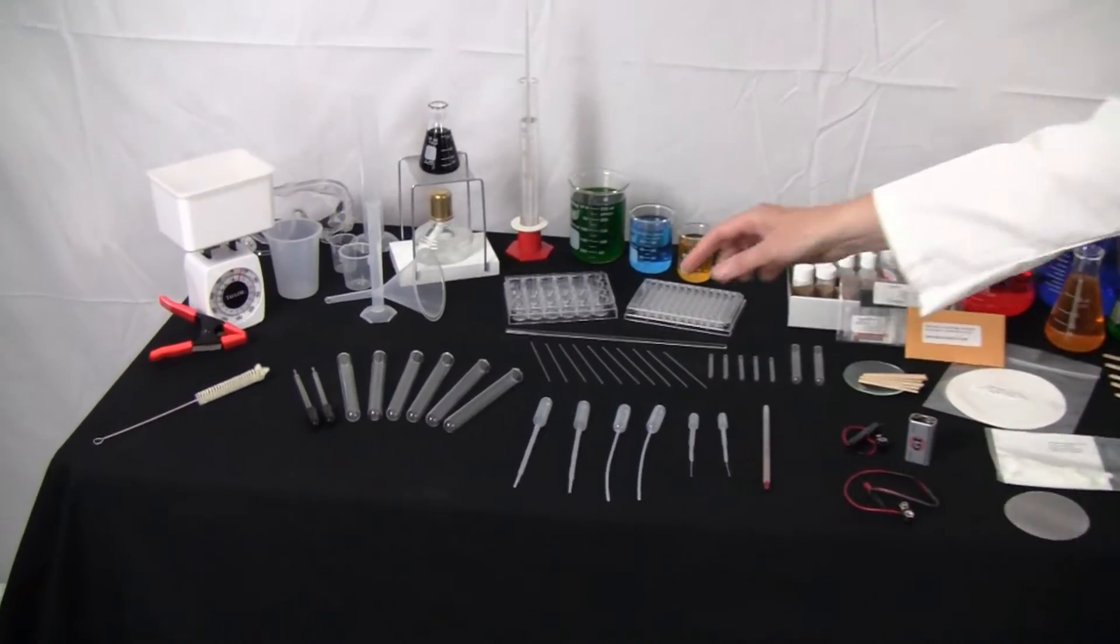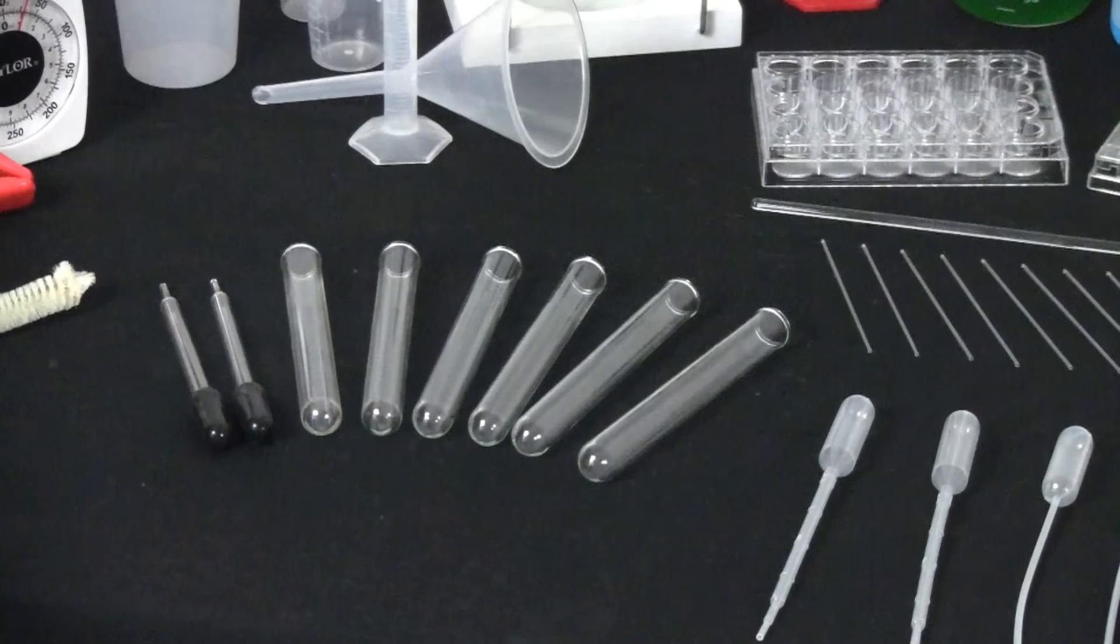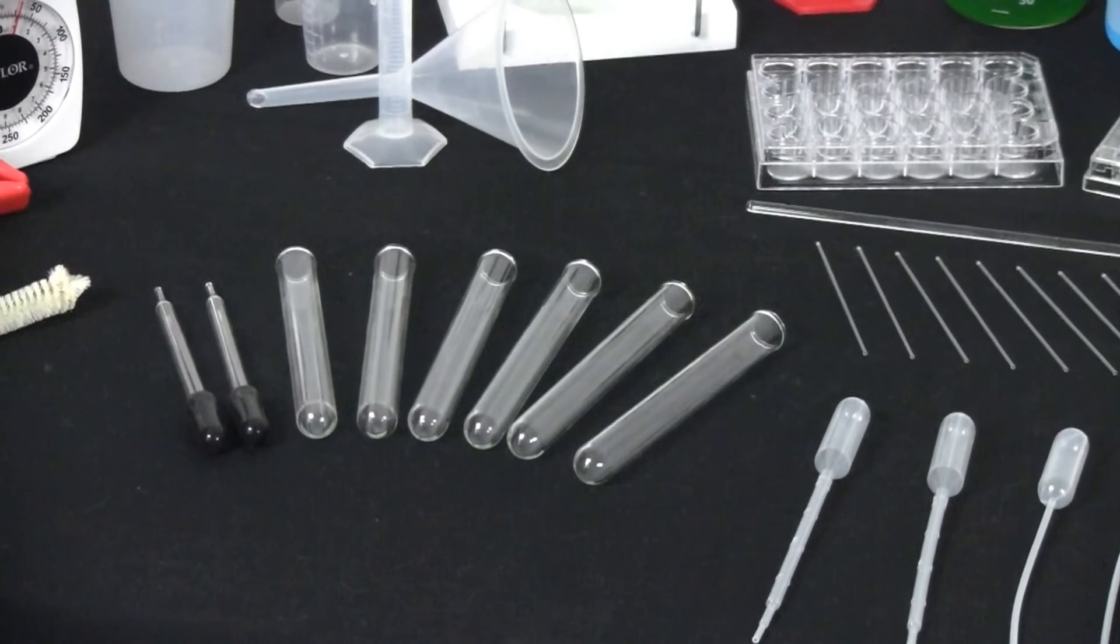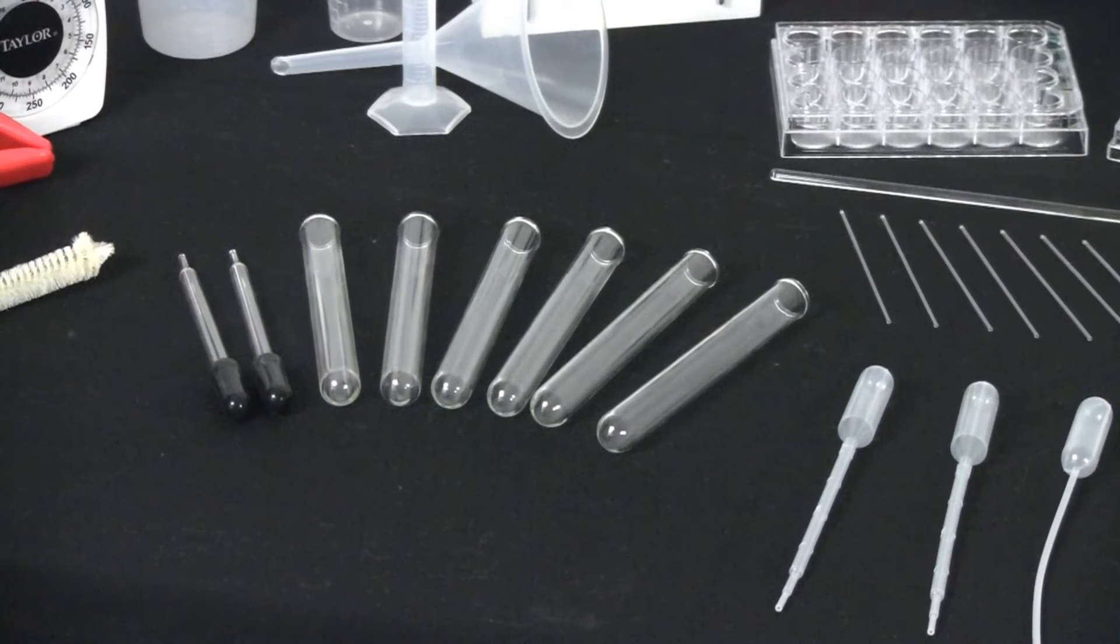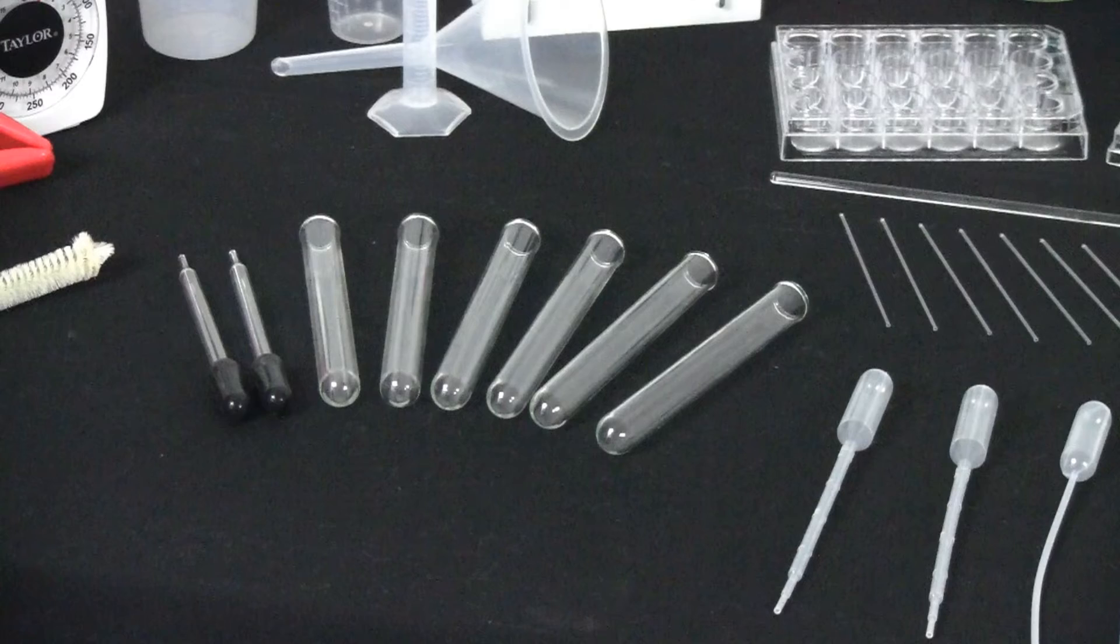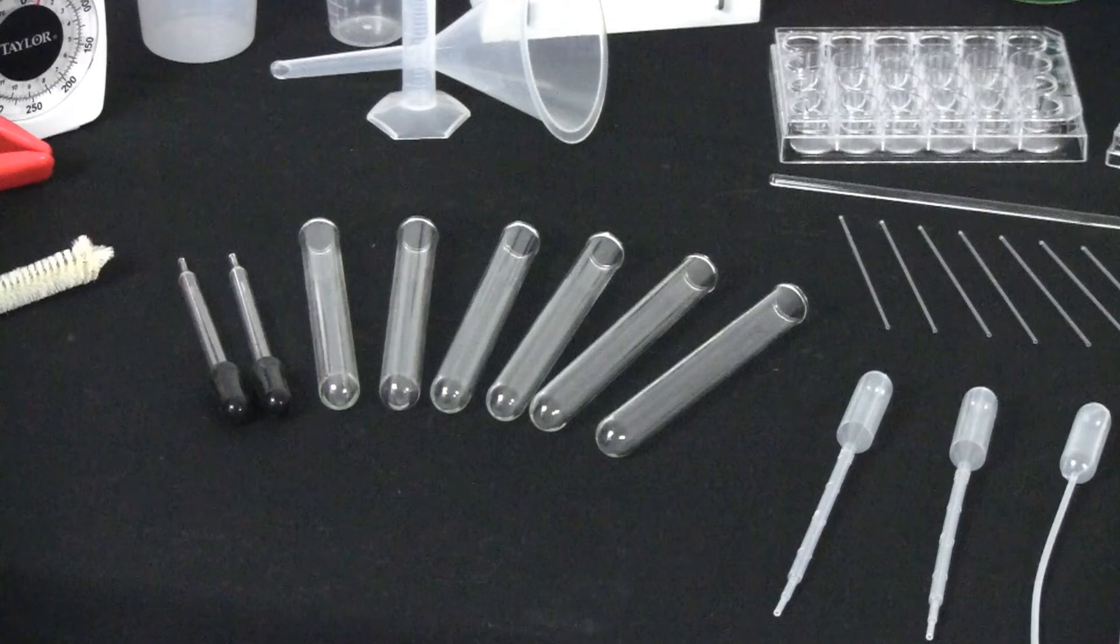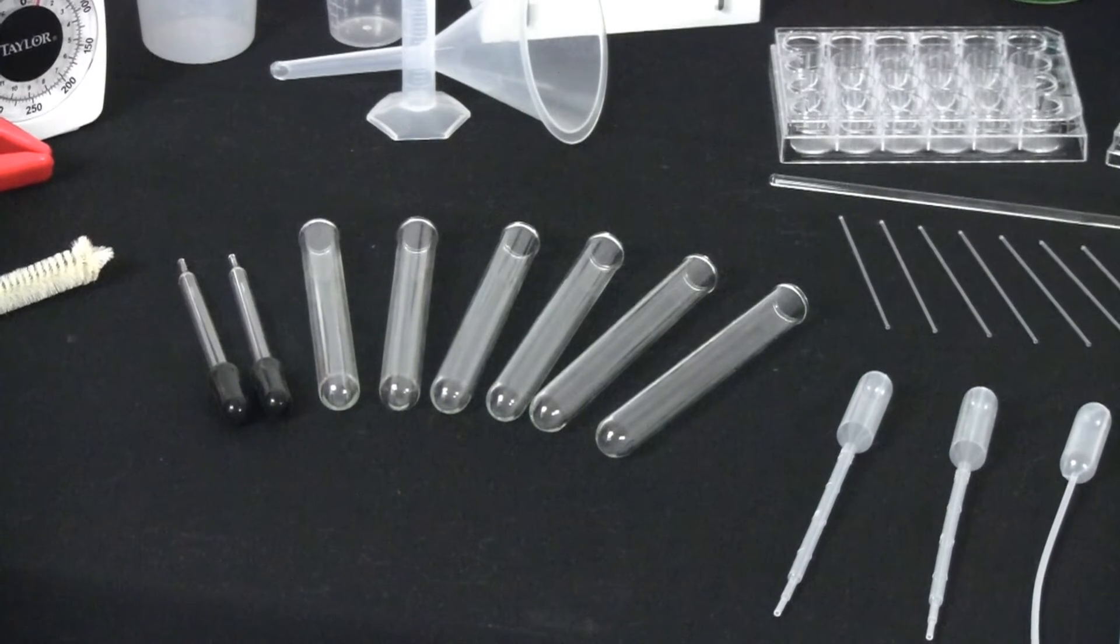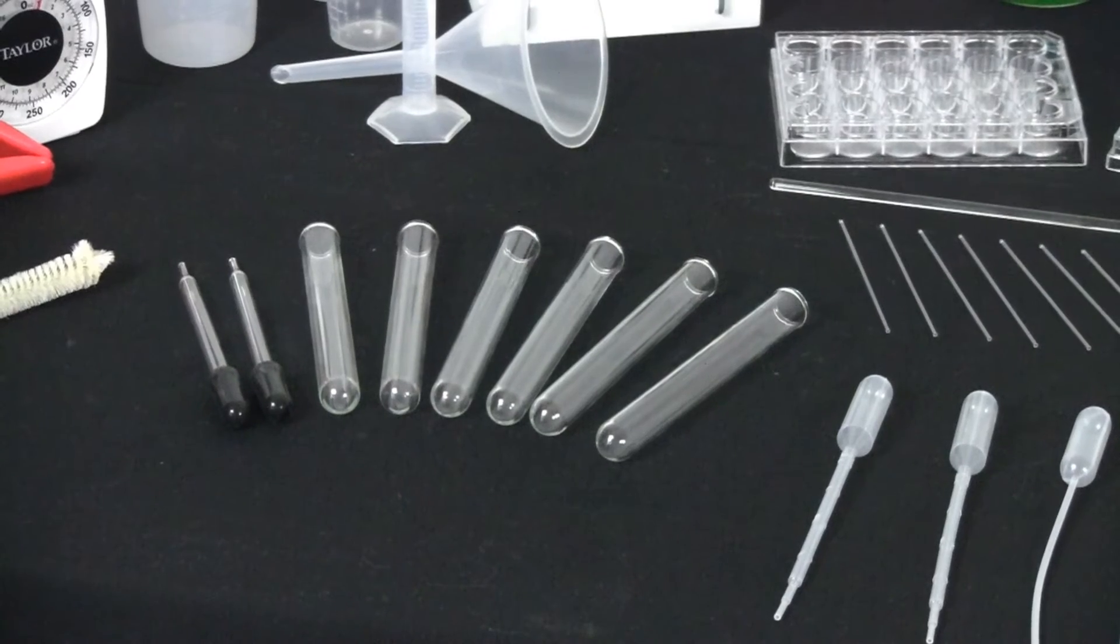The second thing we have is test tubes. So these test tubes are used for a lot of different experiments. They are glass cylinders with an opening at the top, and these hold and mix small amounts of chemicals, and you can put them in a rack. Now one way to make a rack is to have a block of wood and to drill large holes into it, and then you can place them into a rack like that.